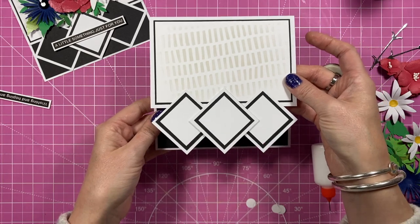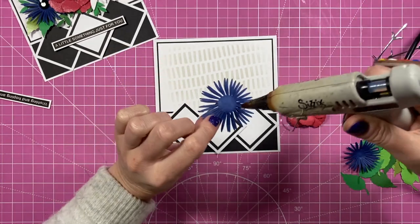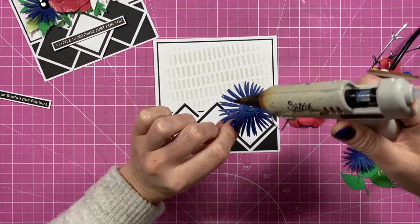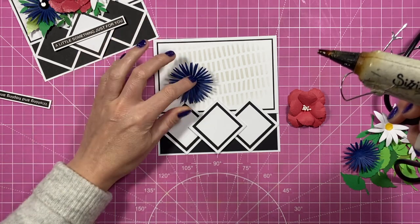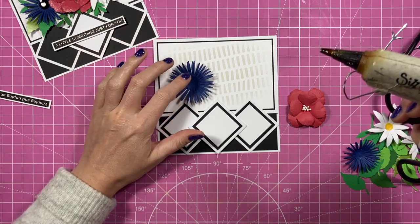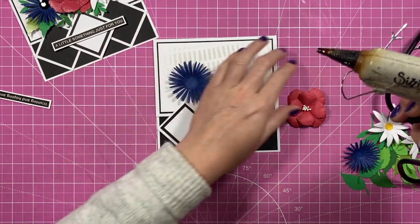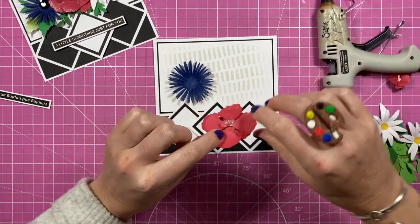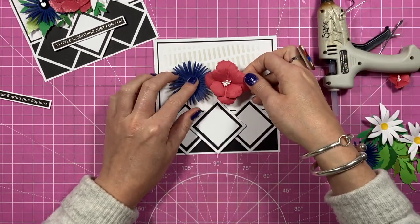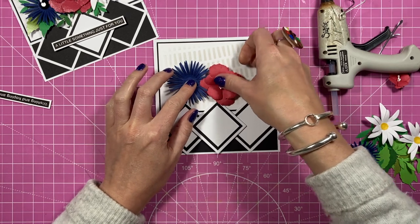Now you should have something that looks like this. So now we can start arranging the flowers so I'm going to do the same pretty much as what I did before. I like to use hot glue when I add the flowers because I just feel you can really move them around.